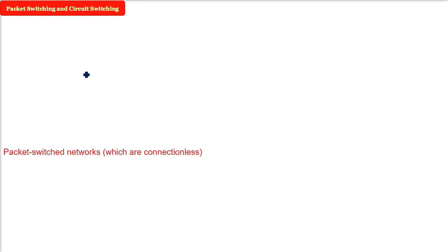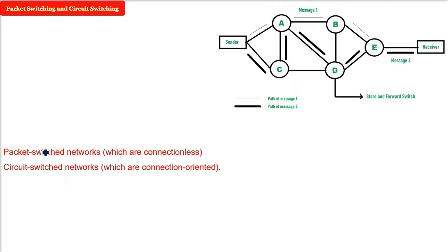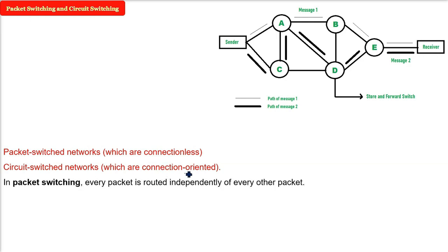Packet switching and circuit switching — there are two basic types of network communication. Packet switching is connectionless; circuit switching is connection-oriented. In packet switching, every packet is routed independently of every other packet. So two messages may take different routes through the network.